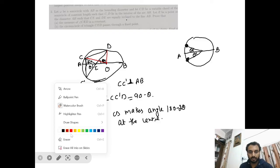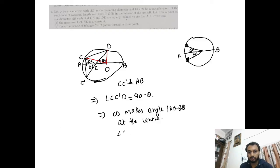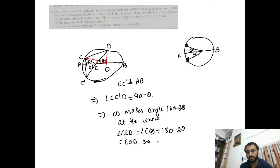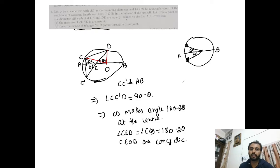If you see, angle CED is basically equal to angle COD, which is 180 minus 2 theta. This means C, E, O, D are concyclic. So the second part — that the circumcircle of triangle CED passes through a fixed point — is proved, because C, E, O, D are concyclic, meaning the circumcircle passes through the fixed point O.